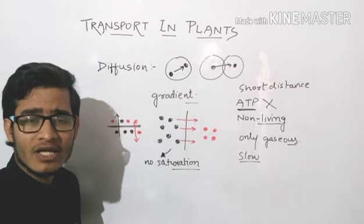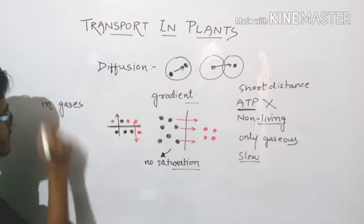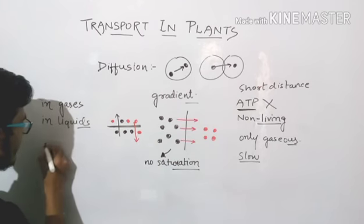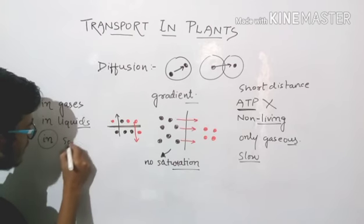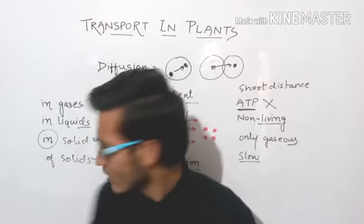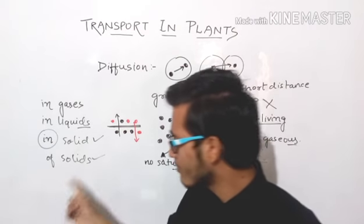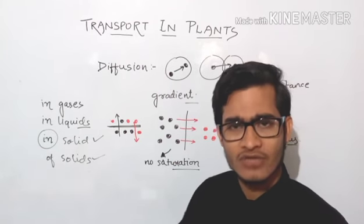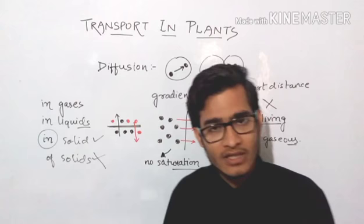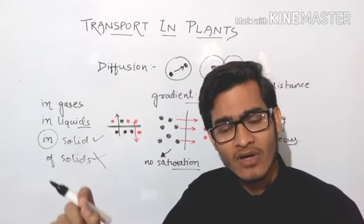The particles involved in diffusion may be gas — that is diffusion in gases — or liquid — that is diffusion in liquids. However, in the case of solids: diffusion in solids may take place, but diffusion of solids may not take place. Gases and liquids are transported according to the concentration gradient, but solid particles cannot move themselves according to a concentration gradient, so there can be no diffusion of solids.